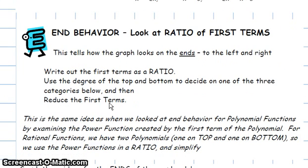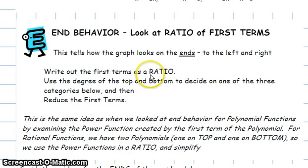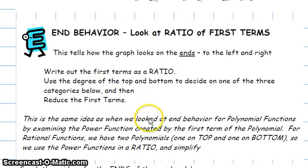The E stands for end behavior — how the graph looks at the ends. You find it by identifying which polynomial the graph resembles for very large values of x. Look at the ratio of the coefficient of the highest power in the numerator to the highest power in the denominator.